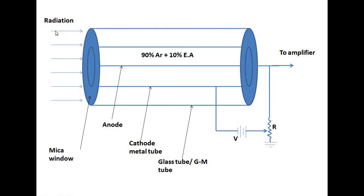When a high energy particle enters into the tube, it ionizes one or more argon gas atoms. The electrons are attracted towards the metal wire or anode, and positive ions are attracted towards the cathode. The moving charges ionize the argon gas, and the ethyl alcohol vapor prevents undesirable avalanching. After ionization, a current pulse passes through the circuit and produces a voltage pulse of between 5 and 50 volts. This pulse is applied to a counter and the number of incoming radiations can be counted.